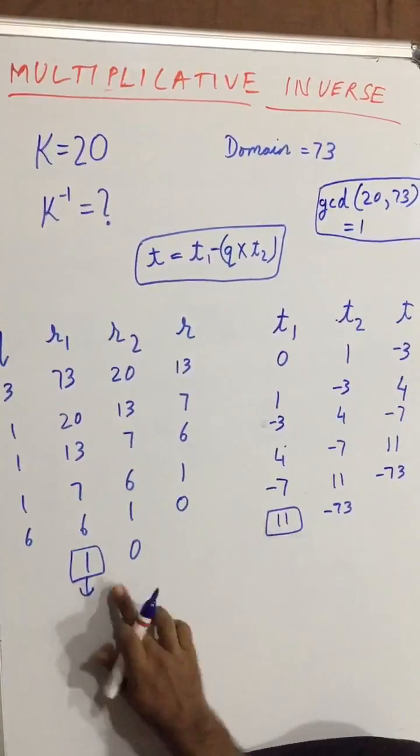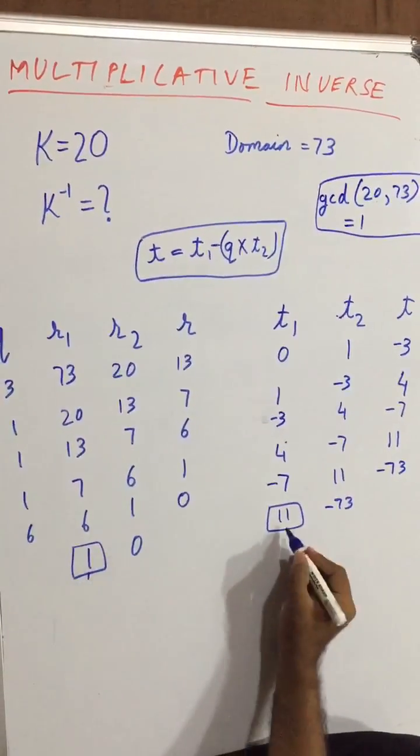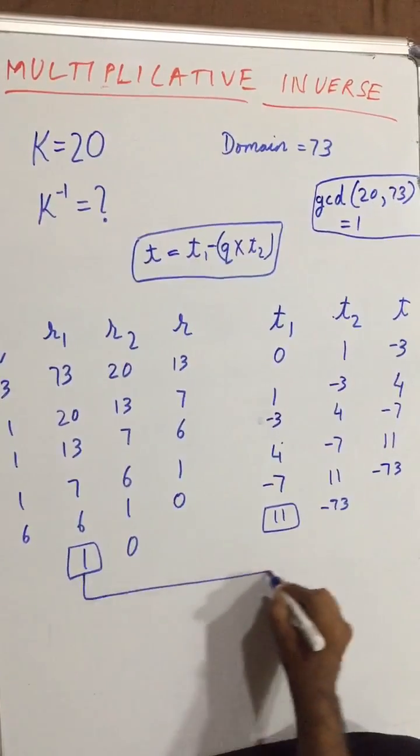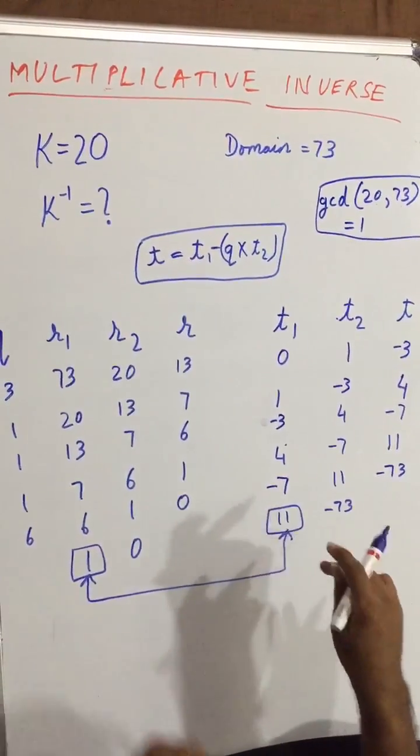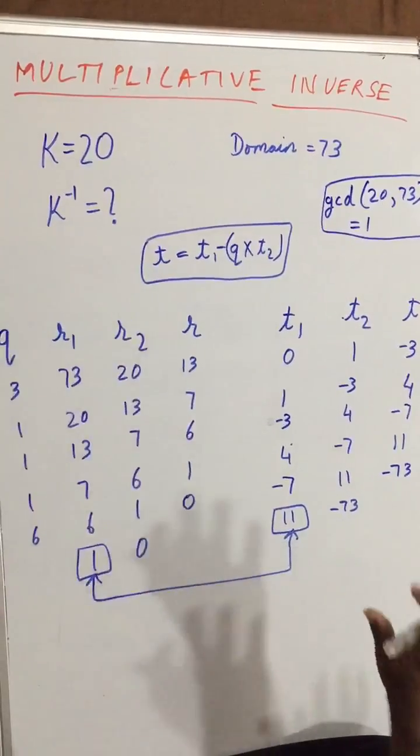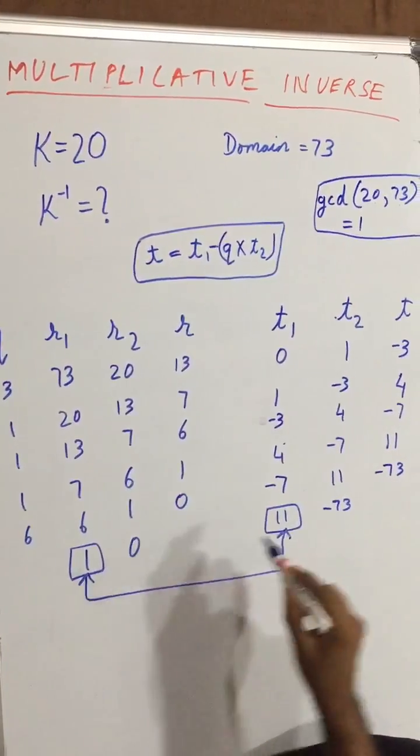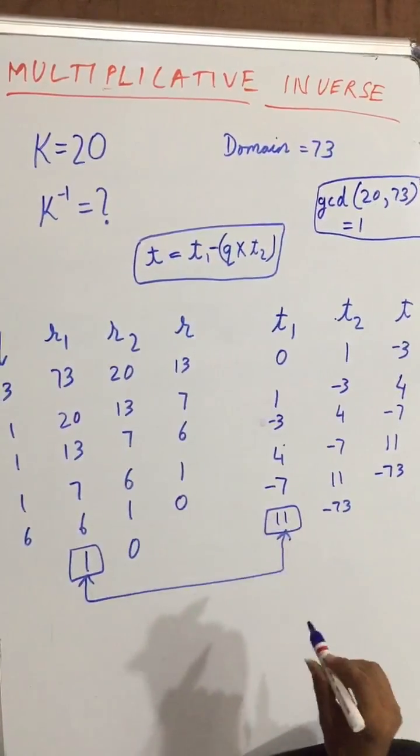So here we can see that we have to always check for the correspondence of this one. So in corresponding of this one, whatever value comes is the multiplicative inverse of our key value. So here our correspondence to one is 11.